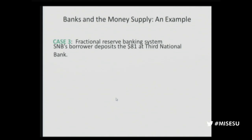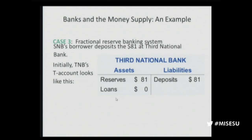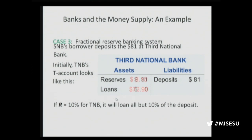The Second National Bank's borrower deposits the $81 at the Third National Bank, whose reserves go up by $81. They have an additional $81 in deposits and liabilities, but only need to back it by 10% — $8.10. So it loans all but 10%, making a loan of $72.90 and keeping $8.10 in reserves. That loan is additional currency that expands the money supply even further. So you get: the original deposit doesn't change the money supply — $100 in currency is exchanged for $100 in deposits. But once loaned out: $90 new dollars in the next round, $81, then $72.90. This is an infinite geometric series, and the total money supply will equal $1,000.